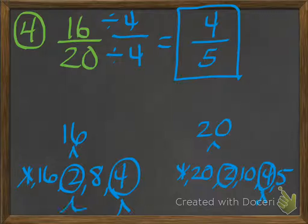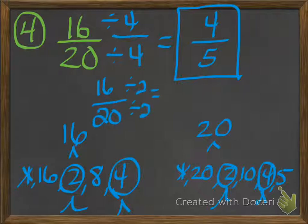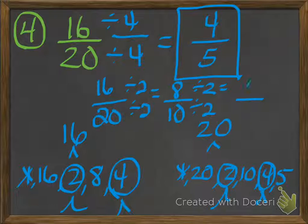Now, if I had used 2 instead — both 16 and 20 can be divided by 2 — I would have gotten 8 tenths, and 8 tenths can also be divided by 2, so I'd have to do another step. I don't like doing extra steps. I want to do one step if I can. So use whatever is the biggest, or the greatest common factor.